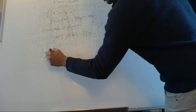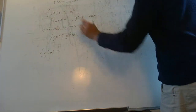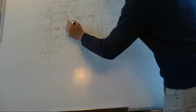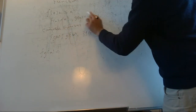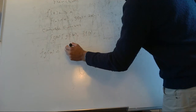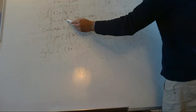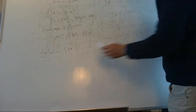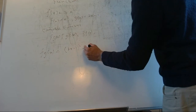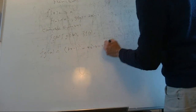So f of g of x means function g goes into f. Function f is x squared and function g is 2x minus 1, so f of g of x will be (2x minus 1) squared. Expanding that gives 4x squared minus 4x plus 1. That's f of g of x.